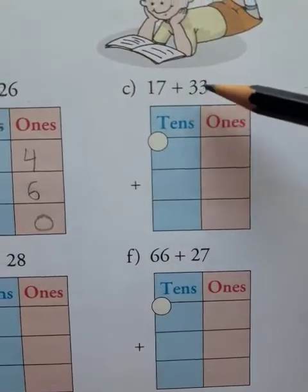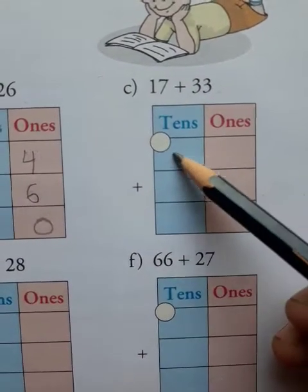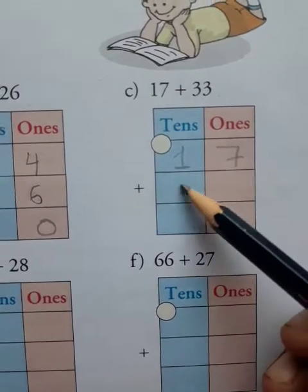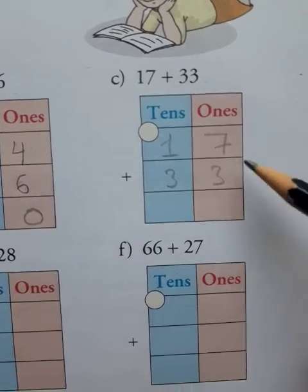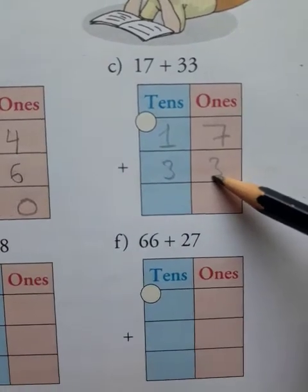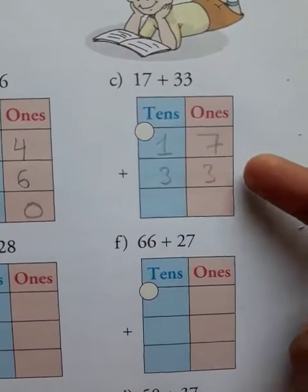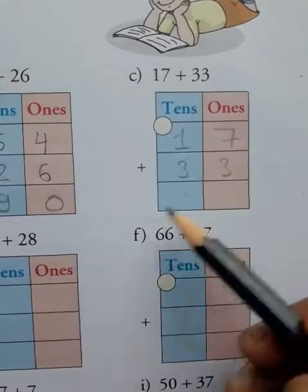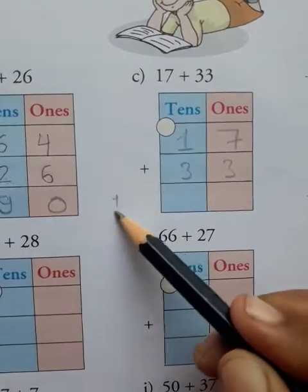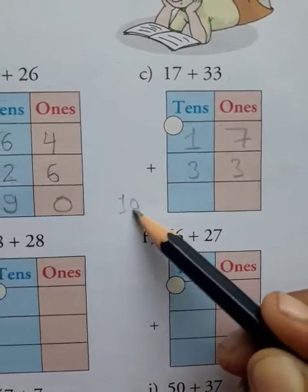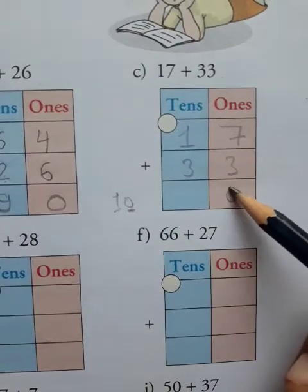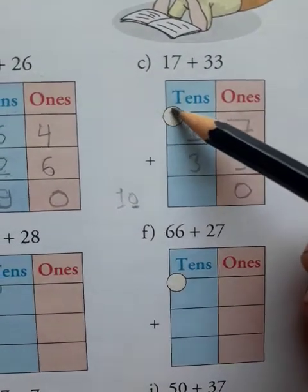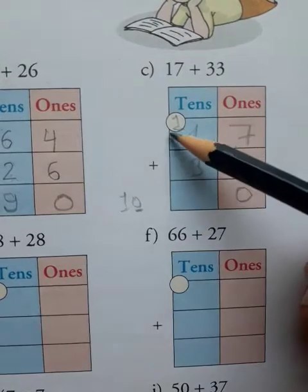Next: 17 plus 33. You write 17 and 33. Now you add the ones place: 7 plus 3 — 7, 8, 9, 10. You know this is 10, and 0 is in the ones place. So you write 0 here. And this 1 is in the tens place, so you carry over to the tens place.